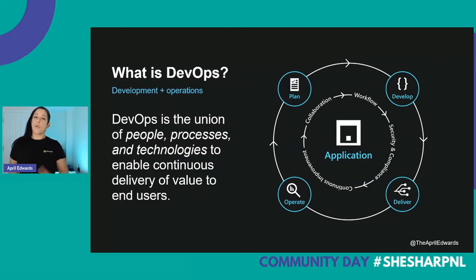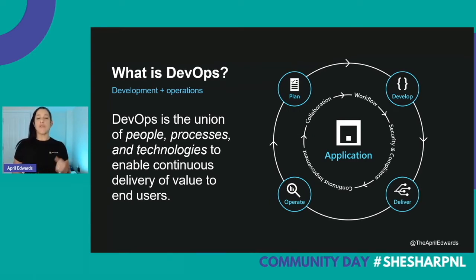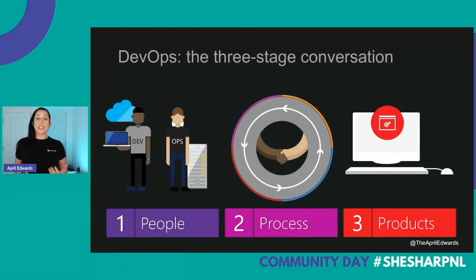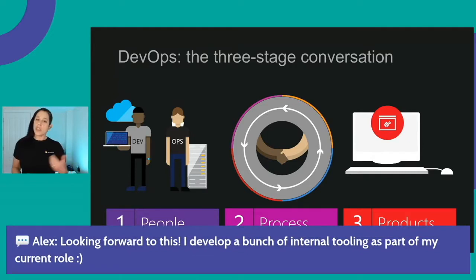At Microsoft, we define DevOps as the union of people, processes, and technologies to enable continuous delivery of value to our end users. I want to talk about the word 'value' — yes, we're trying to ship code and get features out the door, but what is the value? We're not just writing code for the sake of it. It's made up of three components, and today we're focusing on the tooling side.